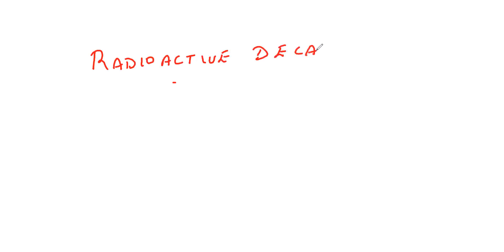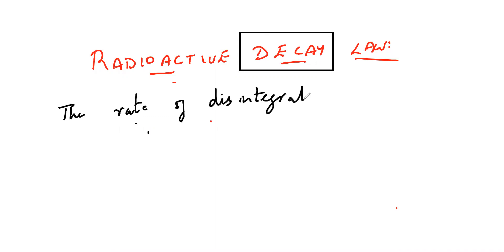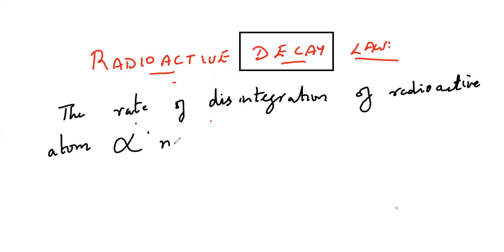The radioactive decay law. This itself gives us the biggest clue: decay. We all know the physical meaning of decay. According to this particular law, the rate of disintegration of radioactive atoms is directly proportional to the number of radioactive atoms present.